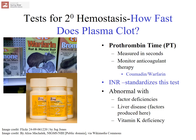The prothrombin time, or PT test, is one of the most frequently performed screening and diagnostic tests in the hemostasis area. Like the APTT, it is measured in seconds, and its most frequent use is to monitor anticoagulant therapy. The longer it takes — the more seconds for a clot to form — the less ability the individual has to form a blood clot. This is beneficial for individuals who have had cardiac procedures, heart attacks, thrombotic disorders, or are treated with anticoagulants for other reasons.